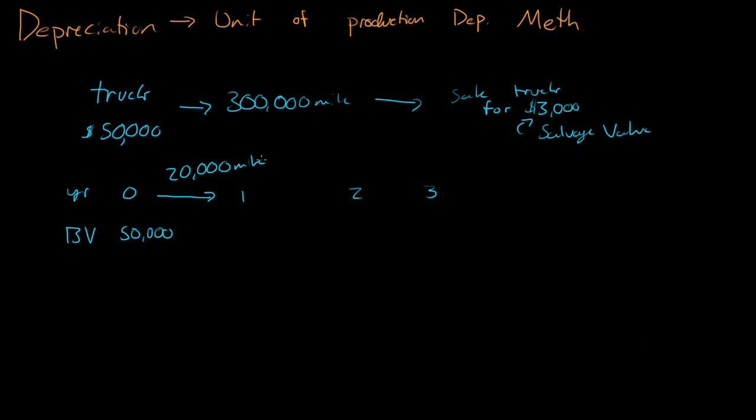So how much of the truck's value decreased, or how much did the book value decrease out of the truck? So to find the book value decrease, we look for the depreciation. So the depreciation of the truck, or D, is equal to the amount of miles we drove, which is 20,000 in the first year, and then we divide that by the 300,000 miles.